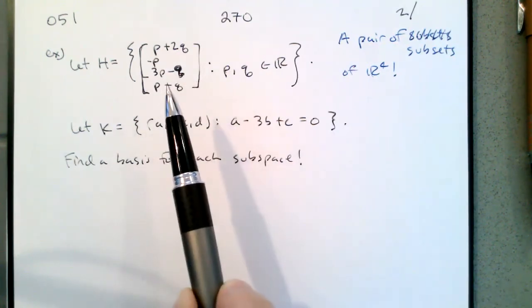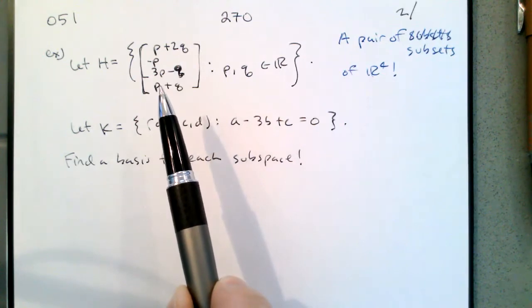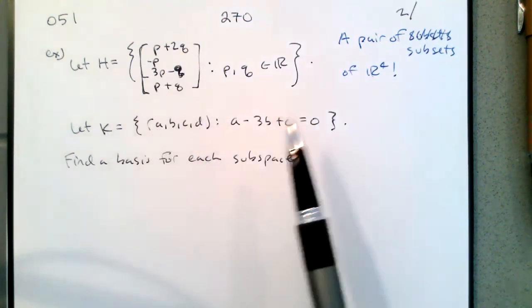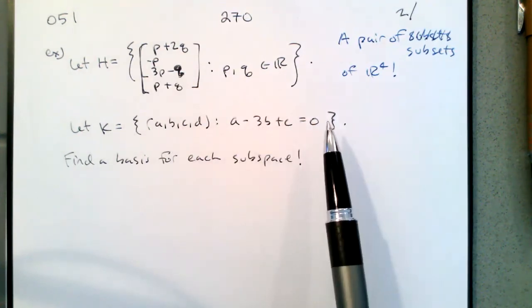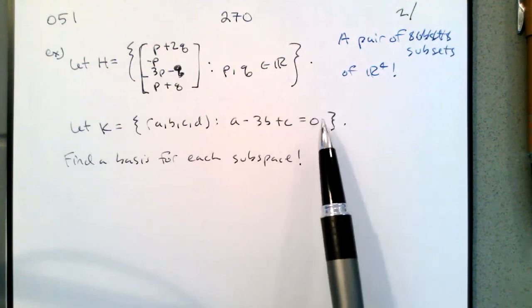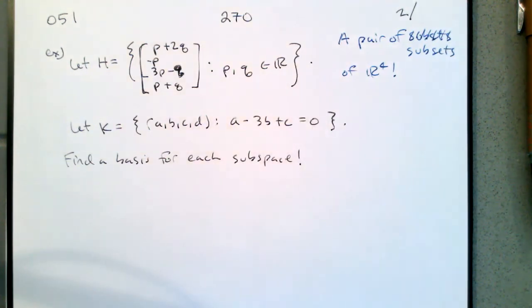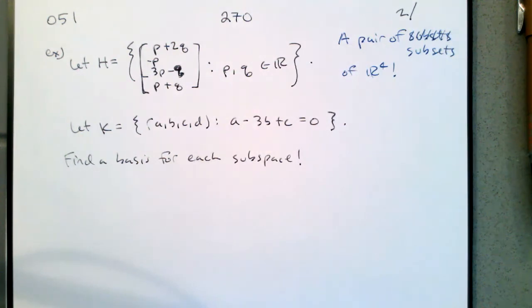H will be closed under vector addition, closed under scalar multiplication, and contain the zero vector. For K, we see that K is the solution set to this homogeneous equation, so that's going to give us a subspace as well. We'll be able to write both of these as the span of a set of vectors, then reduce that spanning set down to a basis. So let's find a basis for each of these subspaces.